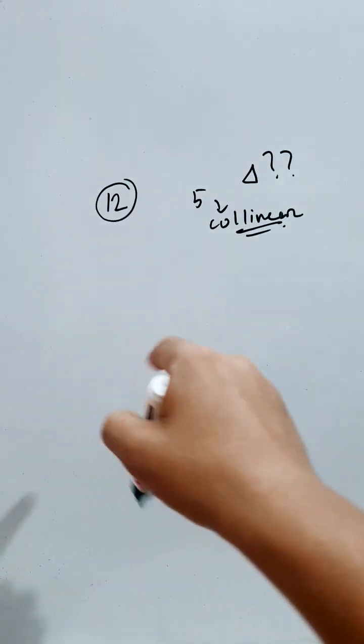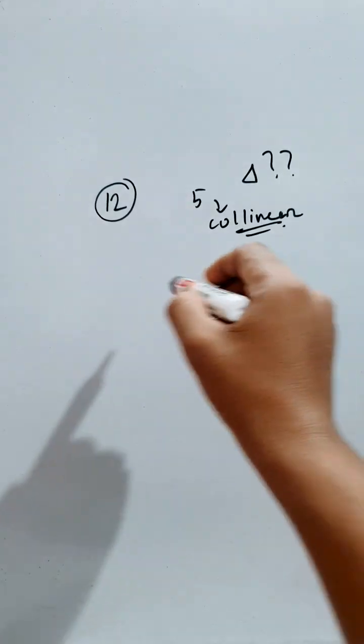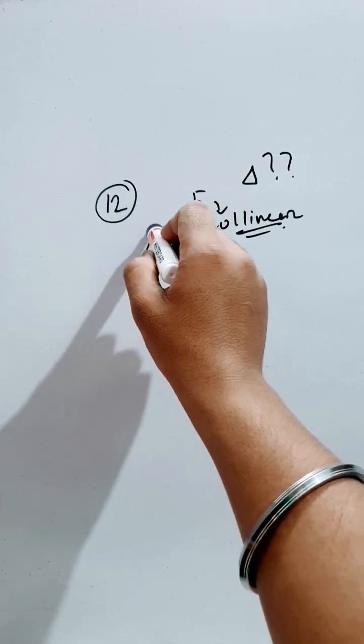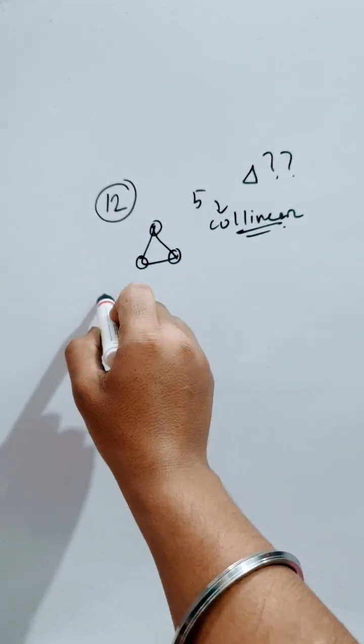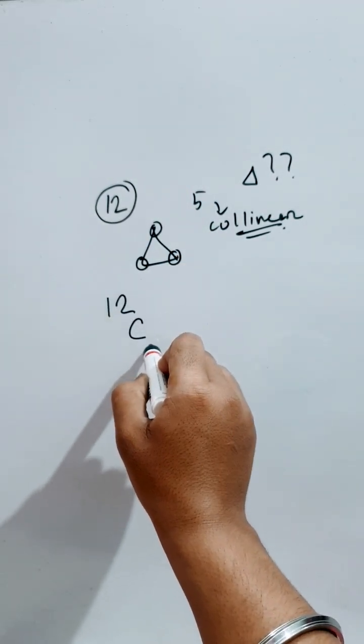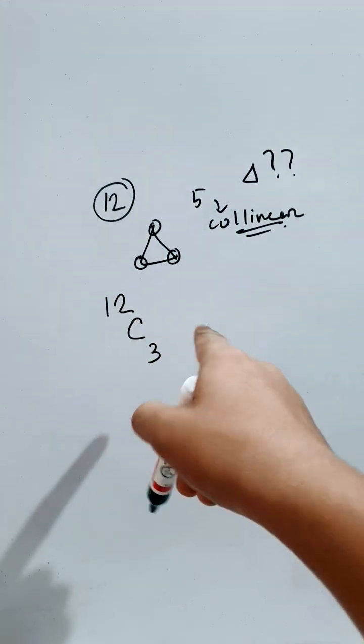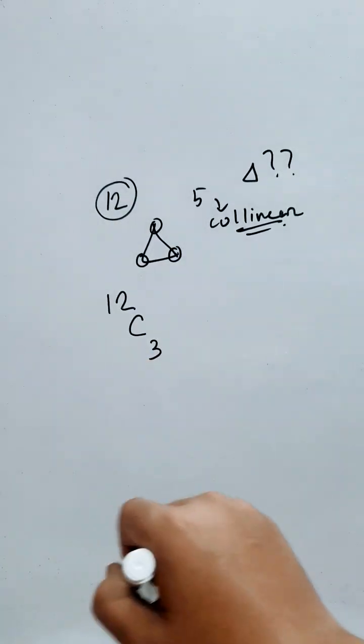12 points are given, of them 5 are collinear. So first of all, to form a triangle we need at least 3 vertices, 3 points. So 12 are provided. So 12C3 is the possible number of triangles that can be formed from 12 points.